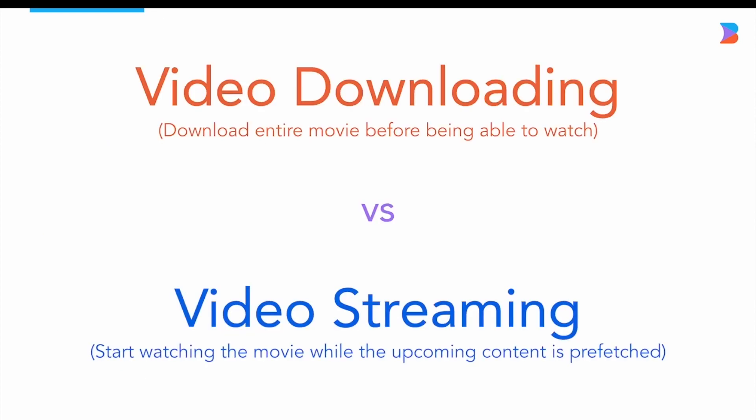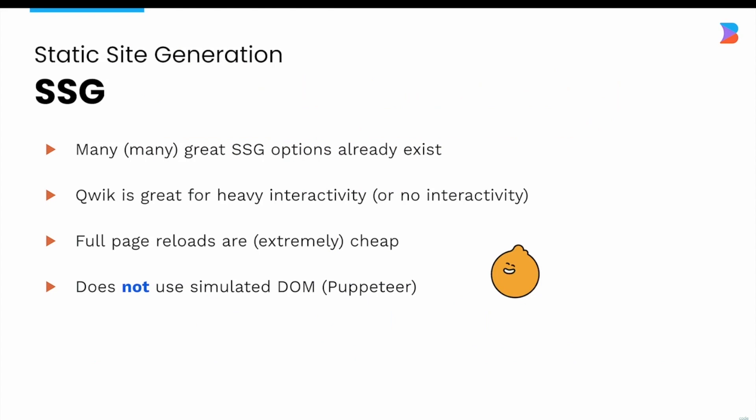Because we can intercept requests and understand the app's module graph, we can reduce network waterfalls by starting all the imports we know an interaction will need at the same time. Actively prefetching an application as a user navigates is like video streaming — Netflix doesn't make you download the entire movie before you can watch it, it streams the video as you watch. Quick's active prefetching is similar: it only prefetches the next possible interactions as the user is interacting.